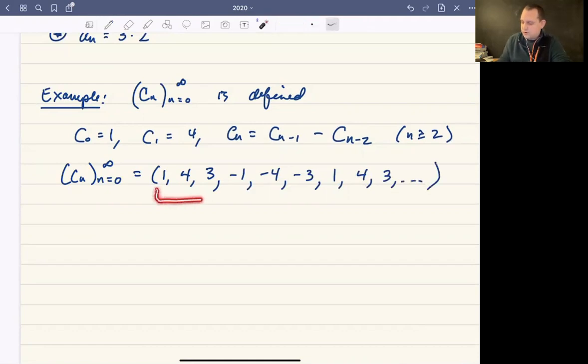And this happens to just repeat indefinitely. So this 1, 4, 3, -1, -4, -3 value happens to get repeated because of how the sequence works. So that's what that sequence is going to look like.